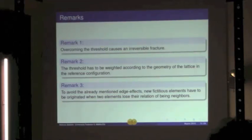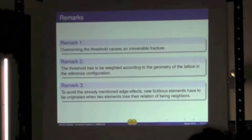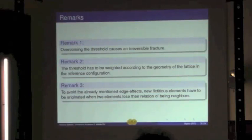The threshold is weighted according to the geometry of the lattice in the referential configuration, so we have some square roots of two that multiply these elements. And when a fracture occurs in the swarm, we see that another boundary is born where the fracture happens, and so to avoid the edge effects that Alessandro was showing before, we have to introduce some new fictitious elements that take the place of the boundary the particle had before the fracture.